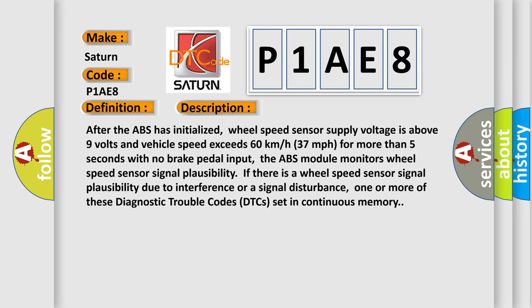After the ABS has initialized, wheel speed sensor supply voltage is above 9 volts and vehicle speed exceeds 60 kilometers per hour (37 miles per hour) for more than 5 seconds with no brake pedal input. The ABS module monitors wheel speed sensor signal plausibility. If there is a wheel speed sensor signal plausibility due to interference or a signal disturbance, one or more of these diagnostic trouble codes (DTCs) set in continuous memory.